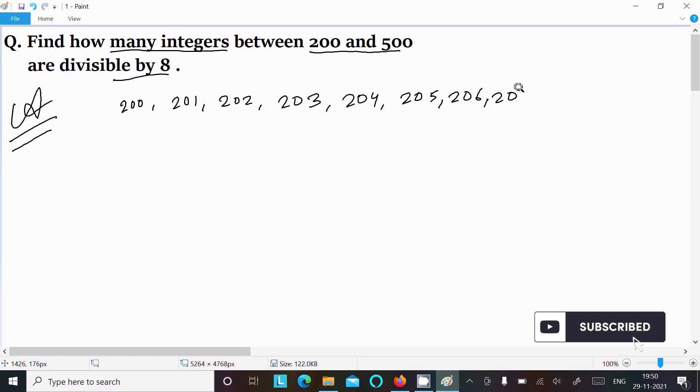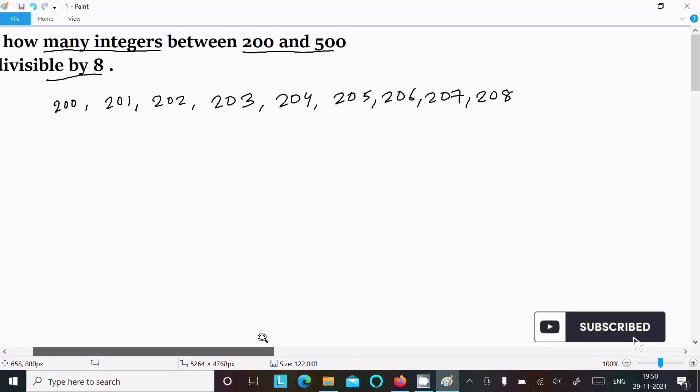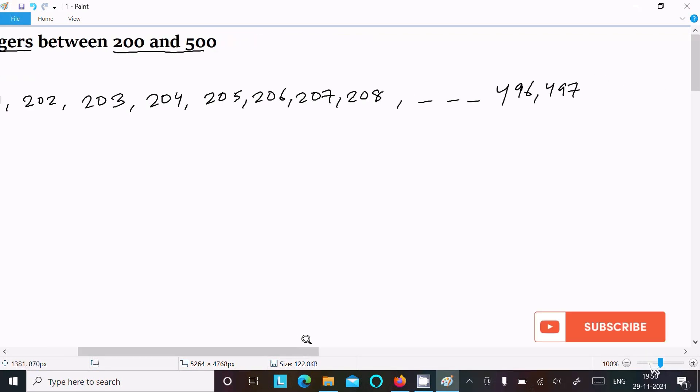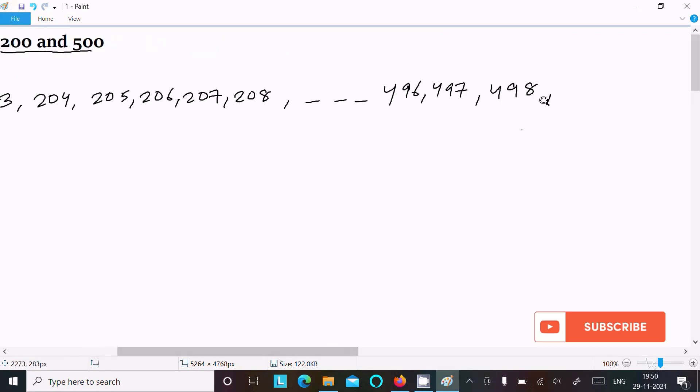207, 208, and then here writing dot dot dot. Let's write here 496, 497, next 498, and here 499.